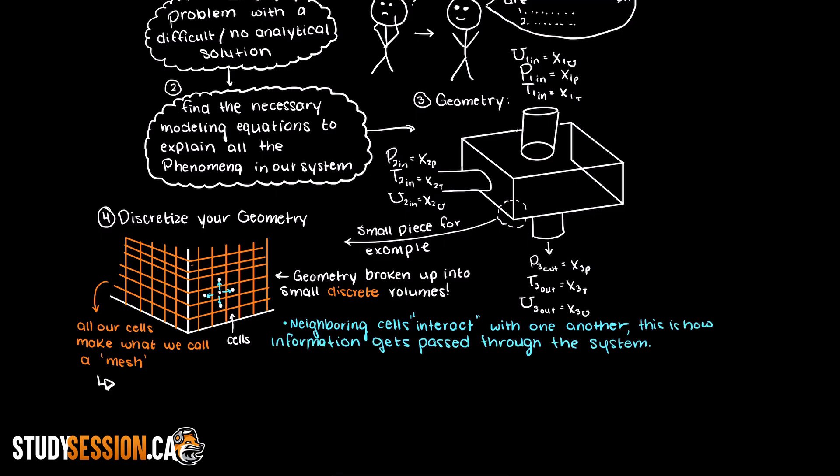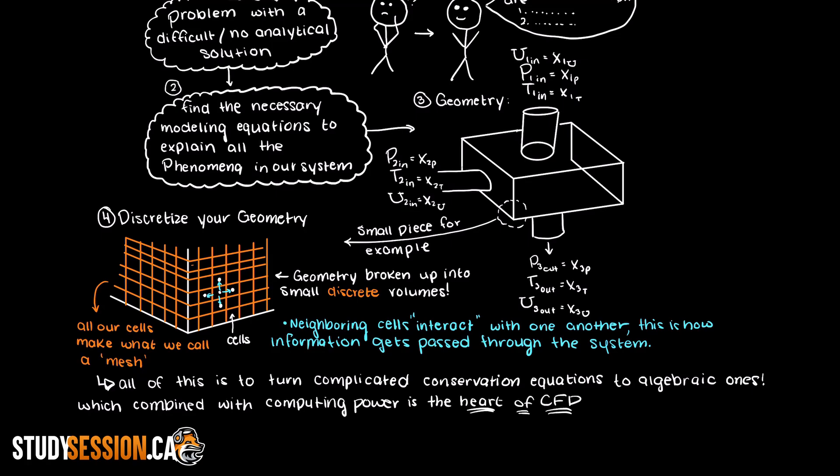Because the area between these cells is super small, our formerly complicated Navier-Stokes equation can now be approximated as algebraic ones, which in combination with raw computing power is the heart of CFD. That is what it is all about. We take something large and complicated and break it down into super small portions, and that is easy to solve with enough computing power.